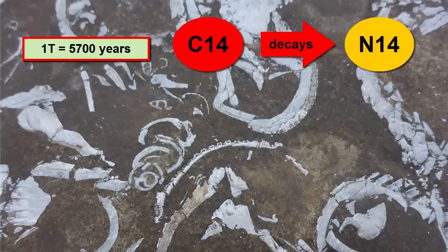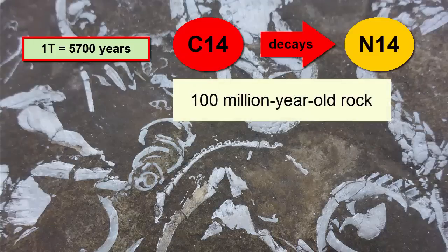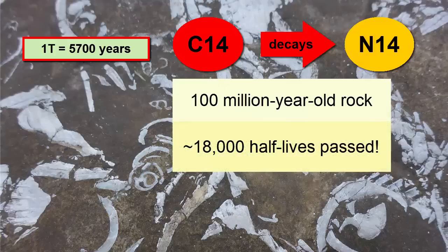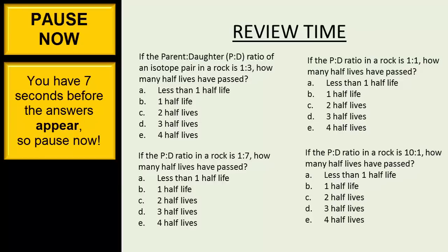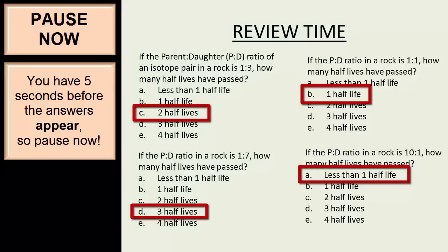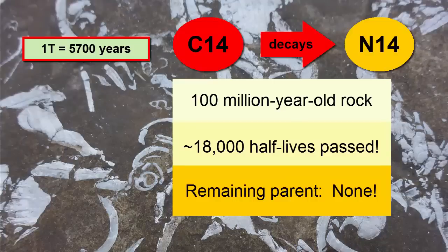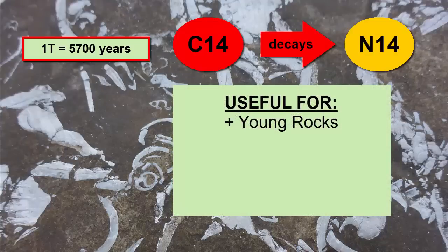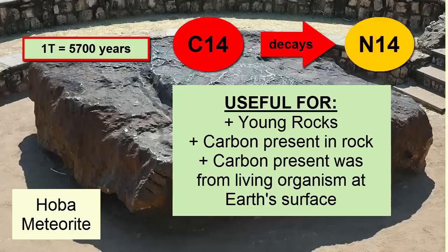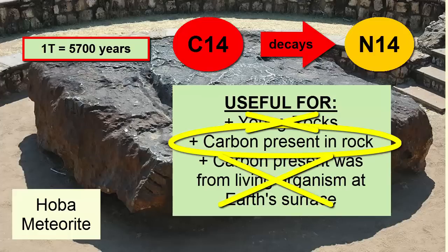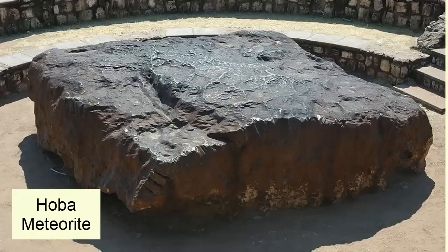If we are trying to use the carbon-14 to nitrogen-14 radioactive decay pair to date a rock that's 100 million years old, there likely will not be enough parent left to measure, and that would not be a good choice. In addition, the carbon-14/nitrogen-14 pair is useful only for relatively young rocks, and only if there is carbon in the rock — specifically carbon that was present in a living organism at some point on Earth's surface. While one half of all meteorites do contain some carbon, they fail on the other two requirements, so we need to identify another radioactive decay pair to date meteorites.